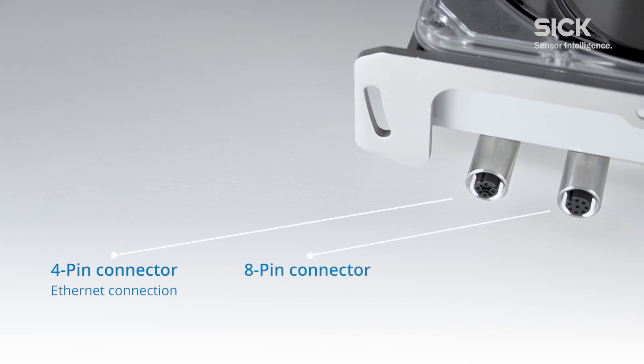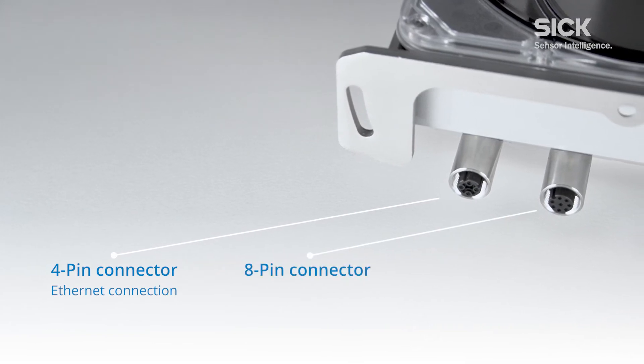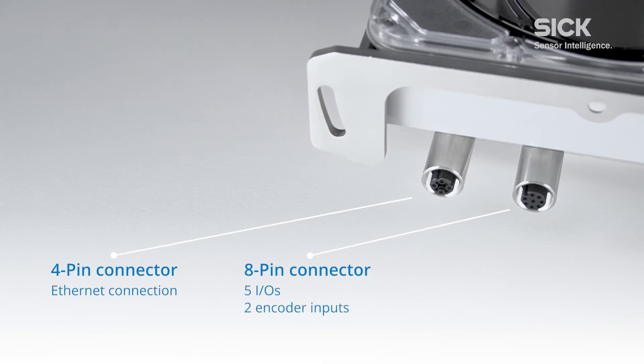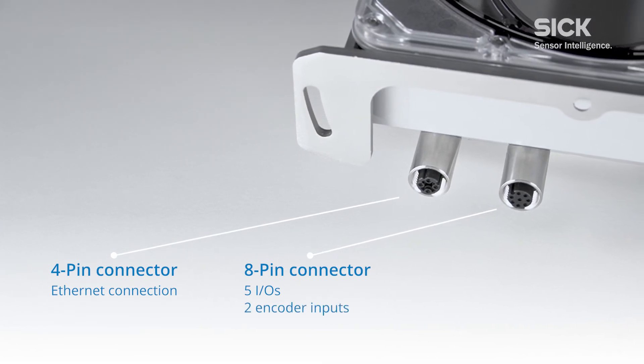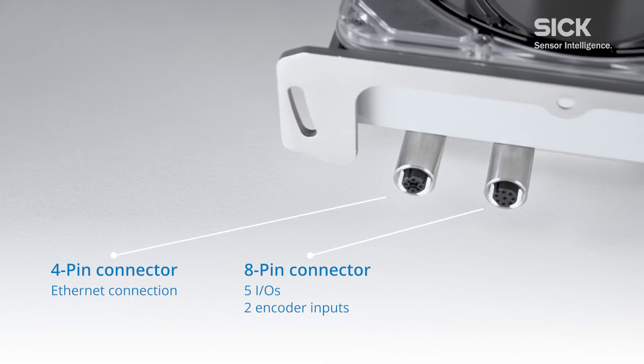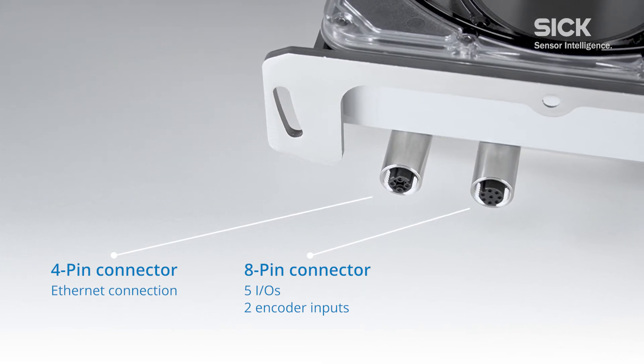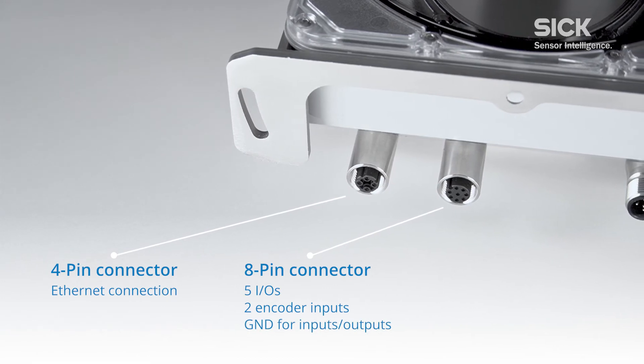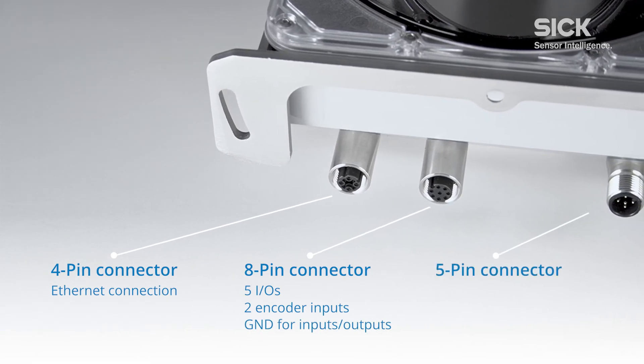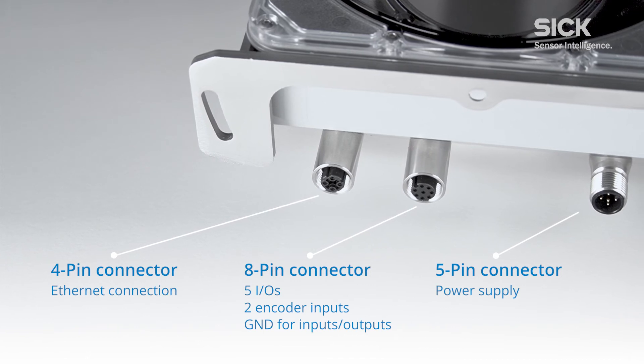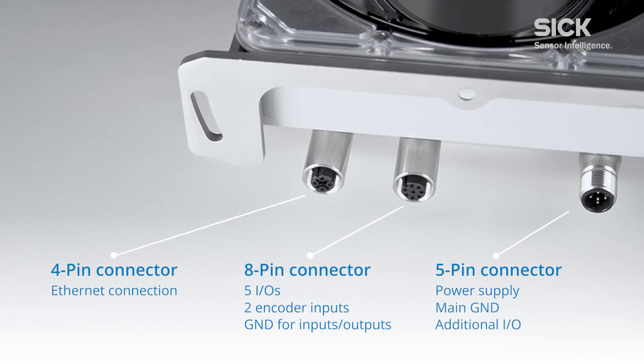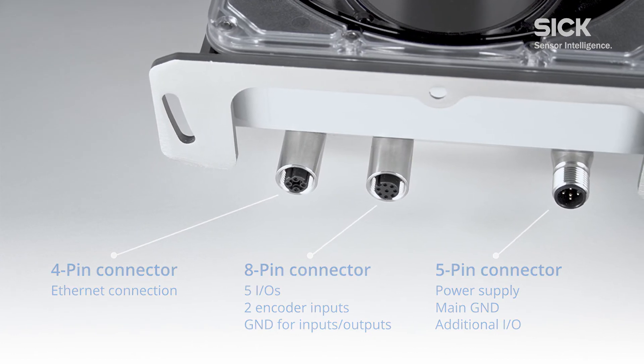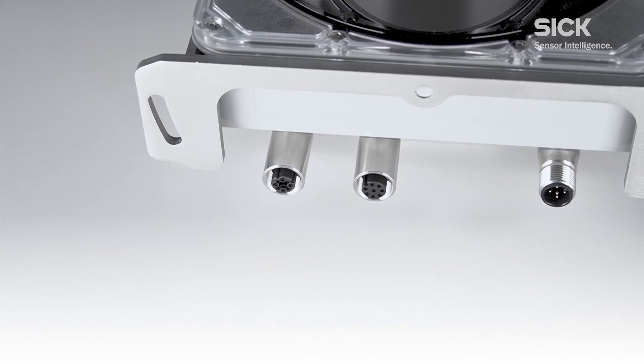The 8 pin connector at the center contains 5 I/Os for switching inputs and outputs, 2 dedicated encoder inputs for example for receiving the angular data of a swivel unit, as well as 1 pin for ground for all digital inputs and outputs. The right 5 pin connector contains the power supply, the main ground as well as an additional I/O. For more detailed information on the pin assignment, please refer to the operating instructions.